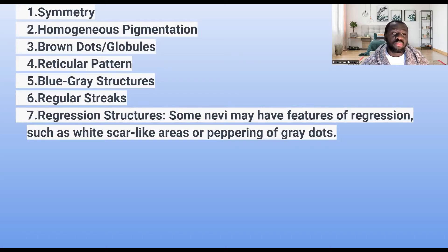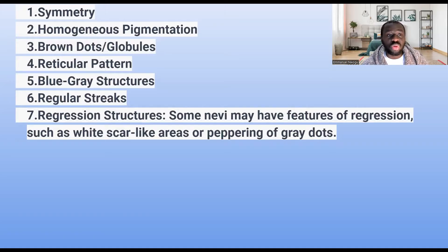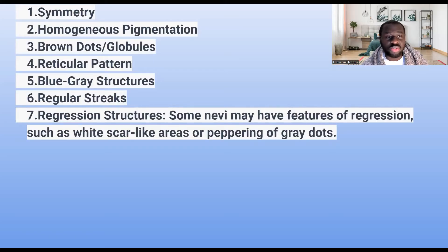There will be the presence of brown dots and globules — especially in young people when these moles may still be growing, you might notice some dots and globules. It could have a reticular pattern, a few globule structures, and regular streaks. The reticular pattern will usually be uniform, and there could be some regression structures.